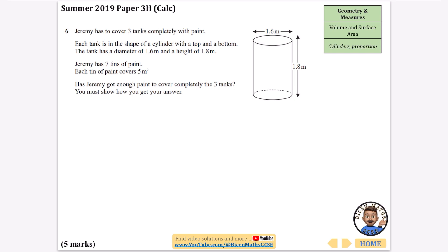Has he got enough paint to cover completely the three tanks? You must show how you get your answer. Because I'm wanting to cover it, I'm trying to work out the surface area. If you think about the surface area like being a net, when you unroll the cylinder you would have a rectangle, then a circle on the top and a circle on the bottom.